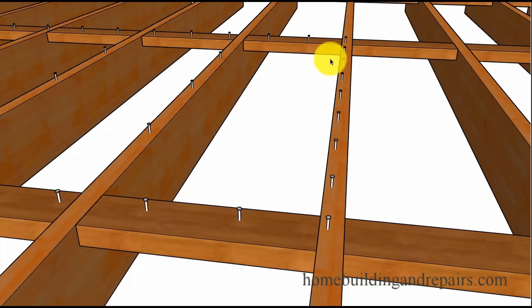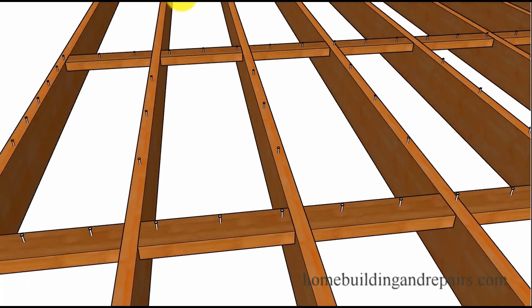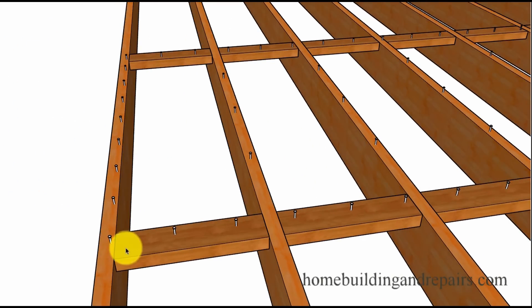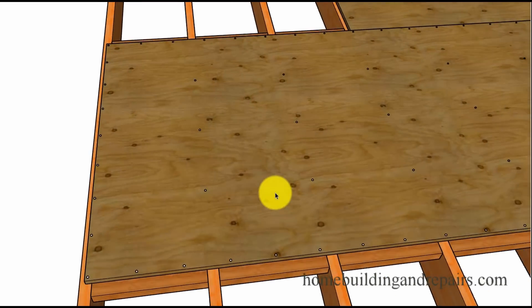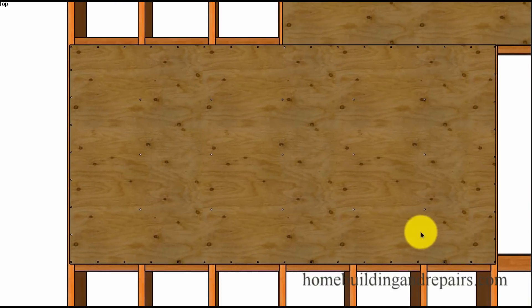This will give you an idea of what it would look like with the nails without the plywood. This is something you can't do on the job, but I can do it on my drawing. So again, square edge plywood, six inches around the perimeter, 12 inches in the field.